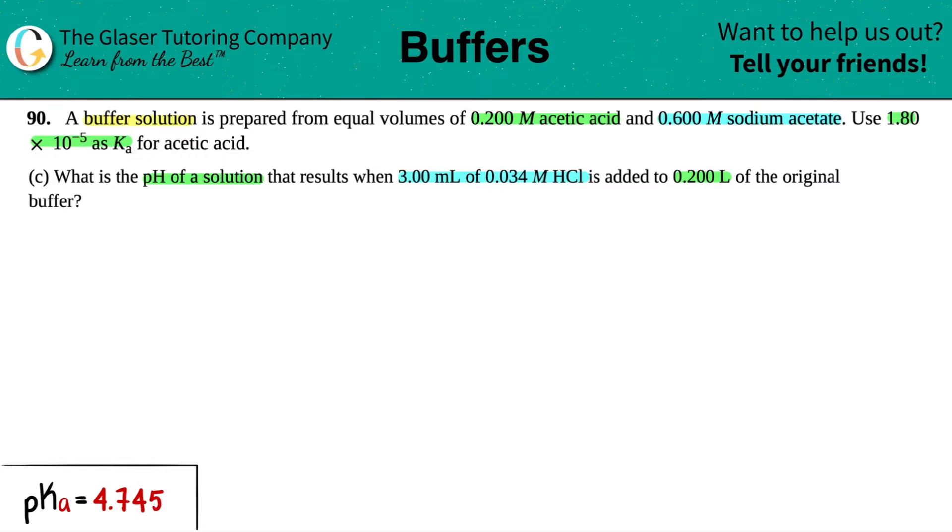We see some keywords here. Now I'm assuming we already did part A and B. If you're on the playlist, it's the number before this one. There are a couple of things that will transfer over into this question. We're still looking for the pH and they told us we have a buffer, so we're still going to use Henderson-Hasselbalch. We always use Henderson-Hasselbalch when dealing with a buffer, especially when they ask for a pH. That's this formula right here.